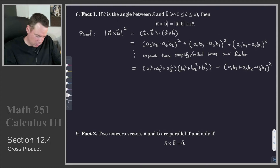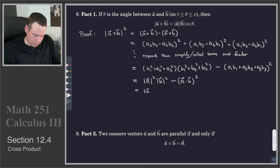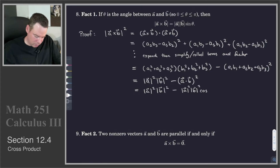The nice thing about this second expression is that its pieces are recognizable magnitudes. The first factor is the magnitude of A squared, the second is the magnitude of B squared, and the subtracted term is A·B, all squared. We also know a dot product can be written in terms of the lengths of the vectors: A·B equals |A||B|cos θ.